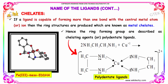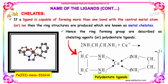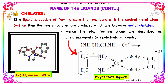Another area under the naming of ligands is chelates. If a ligand is capable of forming more than one bond with the central metal atom or ion, then ring structures are produced, which are known as metal chelates. These ring-forming groups are described as chelating agents or polydentate ligands. A typical example involves copper with ethylenediamine groups, where two ethylenediamine molecules form bonds with a single metal ion to produce a metal chelate.